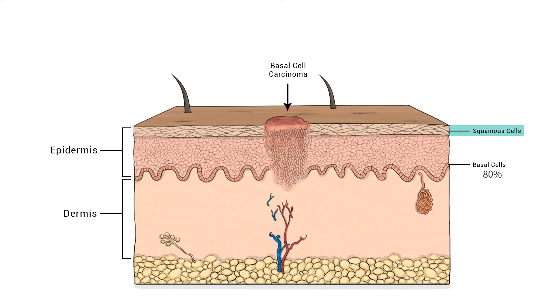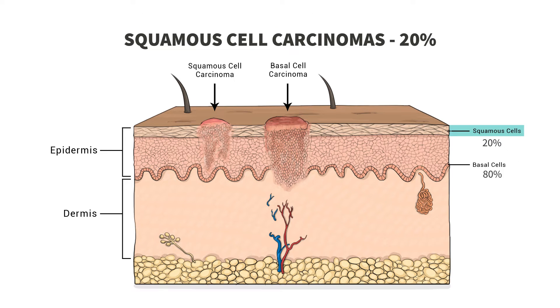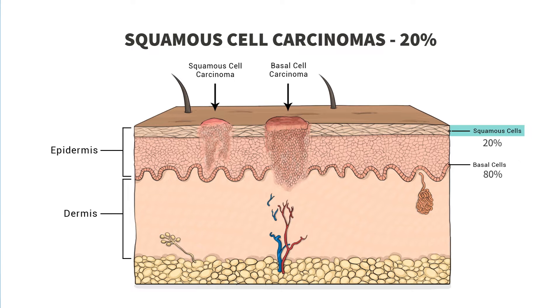Squamous cells sit on top of the epidermis. Around 20% of skin cancers originate from these cells, and they're called squamous cell carcinomas. Like basal cell carcinoma, squamous cell carcinoma is mainly caused by sun exposure, meaning that it can be found on many regions of the body. The most common places to find this type of cancer are on the lips, places on the body where there is a scar, and on the skin surrounding the mouth, anus, and vagina. Squamous cell carcinomas spread to other parts of the body very rarely, less than 5% of the time.